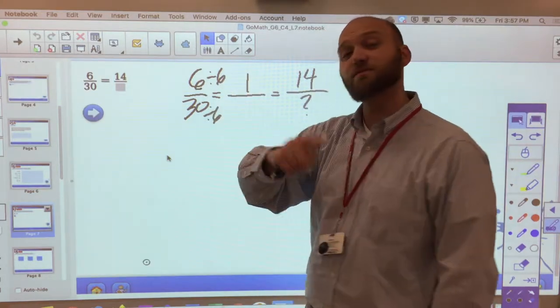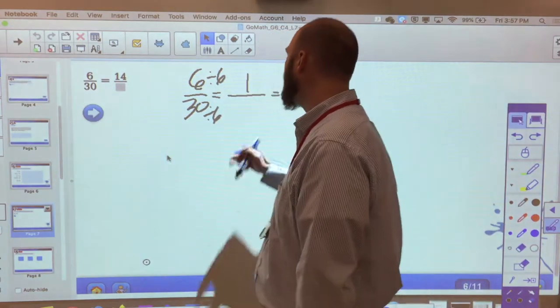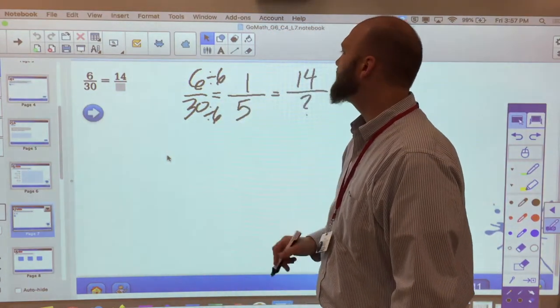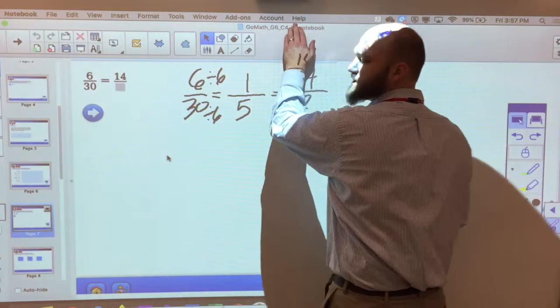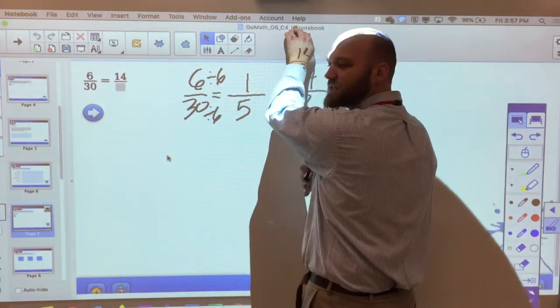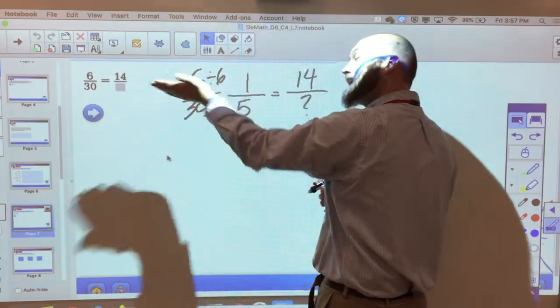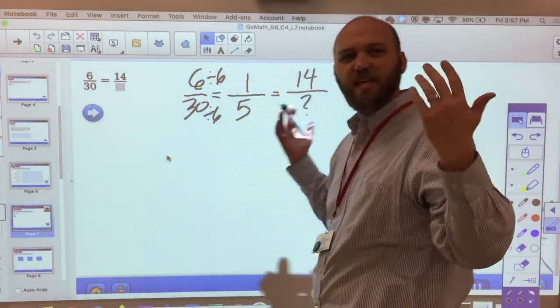6 divided by 6 is 1. 30 divided by 6. So whatever I do to the top, I do to the bottom. 30 divided by 6 is 5. So a 6 to 30 ratio is a 1 to 5 ratio. We're just simplifying fractions here. I can find the greatest common factor. I can simplify my fractions. It's the same thing.